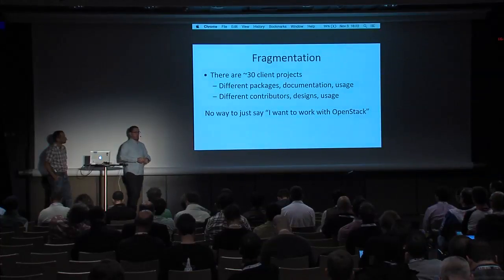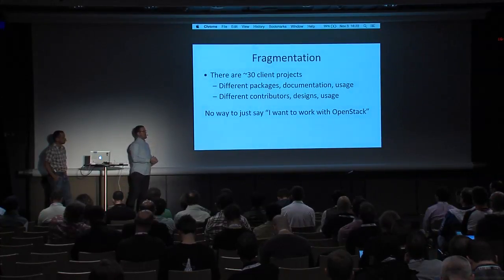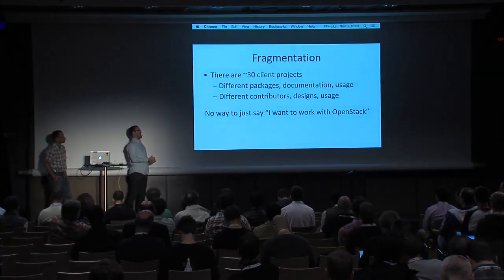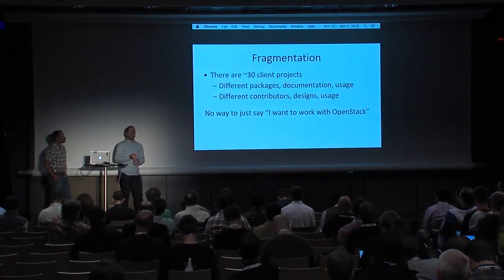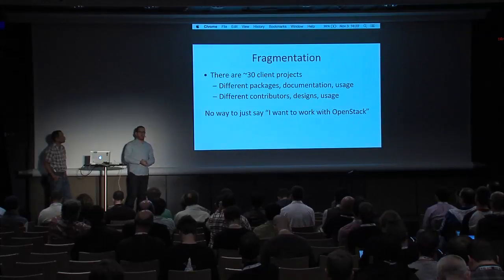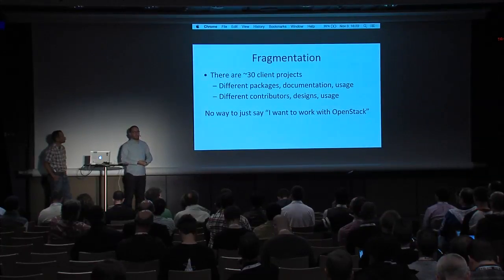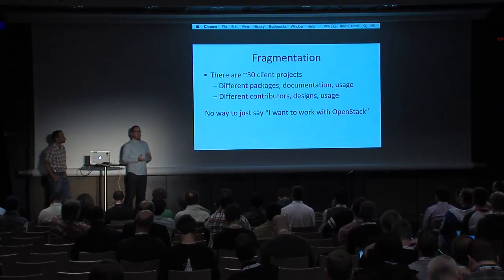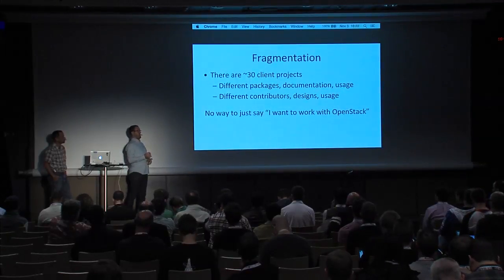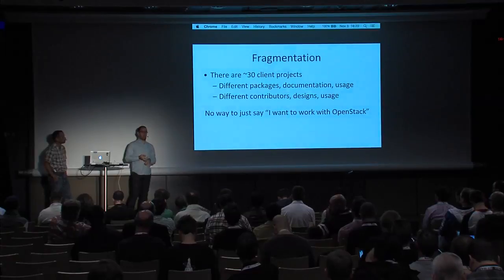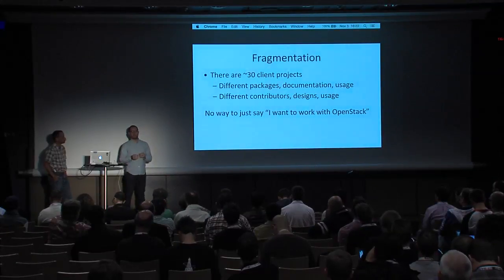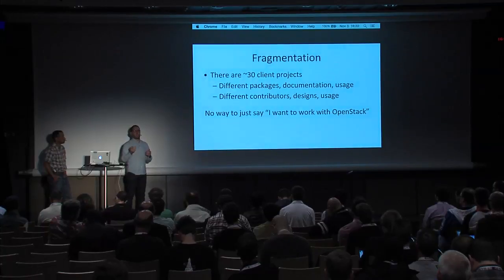Looking at the fragmentation across OpenStack, there are 30 different clients, all written by different people for the most part, all different packages. I don't think anyone's building stuff that uses all 30 of these projects, but even for a small number of different services you're consuming a bunch of different packages with different varying levels of documentation, used even the slightest bit differently — and those differences really do add up.